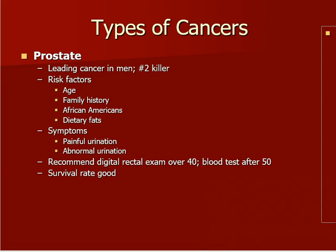Prostate cancer is the leading cancer in men and the number two killer in men, with lung cancer being number one. Risk factors include age, family history, being African American, and a diet high in dietary fats. Symptoms can include painful or abnormal urination. A digital rectal exam is recommended for men over 40, and blood tests after age 50. The survival rate can be pretty good because it can often be detected early enough to prevent the spread.